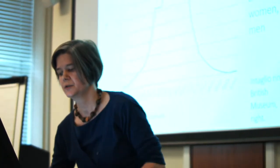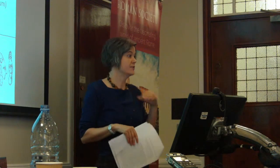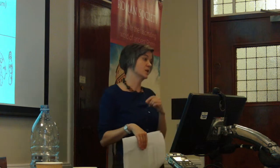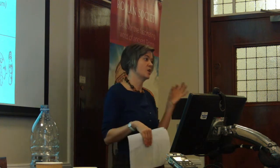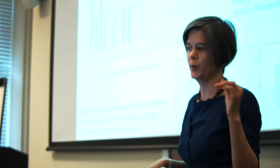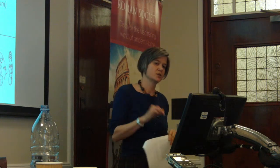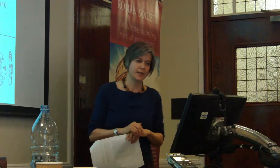Now if we start to look at individual motifs, the first one I looked at was phallus rings — already in some catalogues scholars have noticed that these rings occur in very small sizes. My graphs all show the overall distribution in grey and the distribution of rings with the particular motif in black. The phallus rings cluster at the extreme small end of the distribution, with the biggest peak at 11mm diameter — just think about how tiny that is.